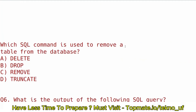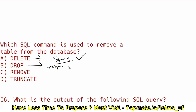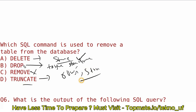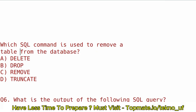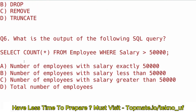From SQL: which command is used to remove a table from the database? DELETE removes only a row but keeps the table structure. TRUNCATE removes all rows but keeps the structure. DROP removes the full table and its structure. REMOVE is not a valid keyword. The correct answer is DROP.